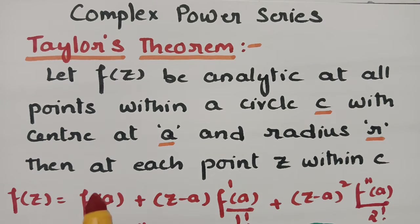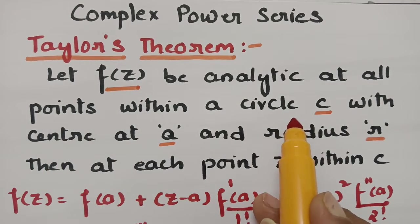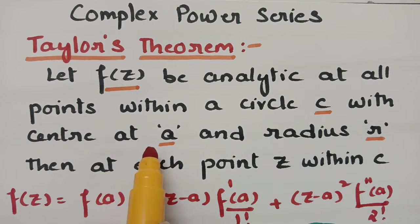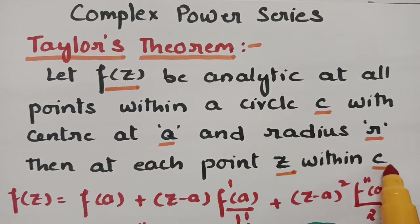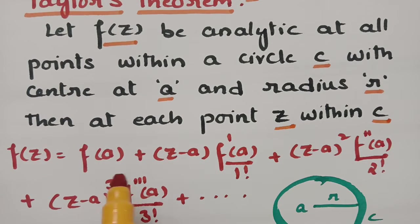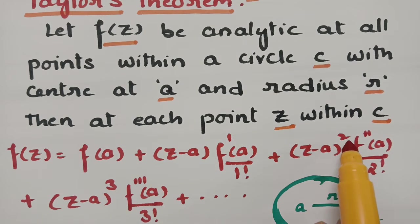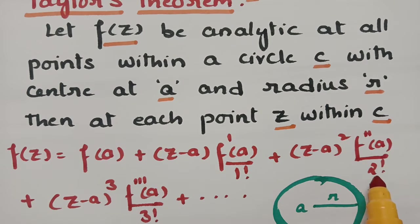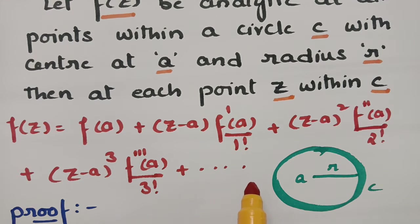The statement of Taylor's theorem states that: let f of z be analytic at all points within a circle c with center at a and radius r. Then at each point z within c, f of z is given as f of a plus z minus a into f dash of a by 1 factorial, plus z minus a squared into f double dash of a by 2 factorial, plus z minus a whole cube into f triple dash of a by 3 factorial, plus and so on.